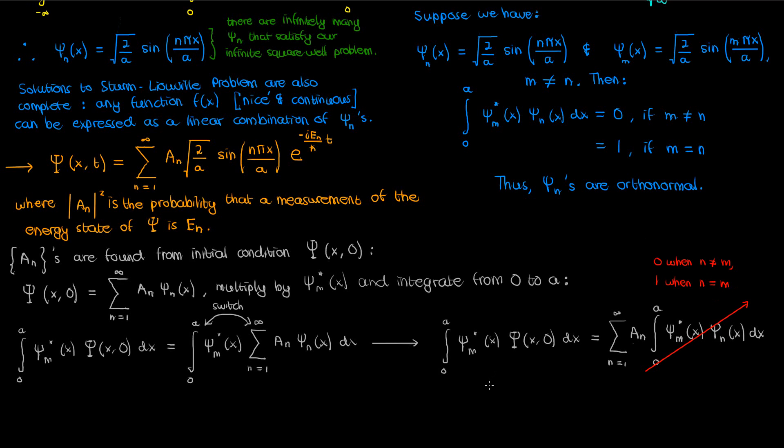Now from the orthogonality property, the integral on the right is 0 unless m and n are equal. The only time it isn't 0 is when n equals m, which means that every single term in the summation will cancel out except when n equals m. This hugely simplifies things to give us A sub m equals the integral from 0 to A of the conjugate of small psi sub m times big psi of x comma 0.